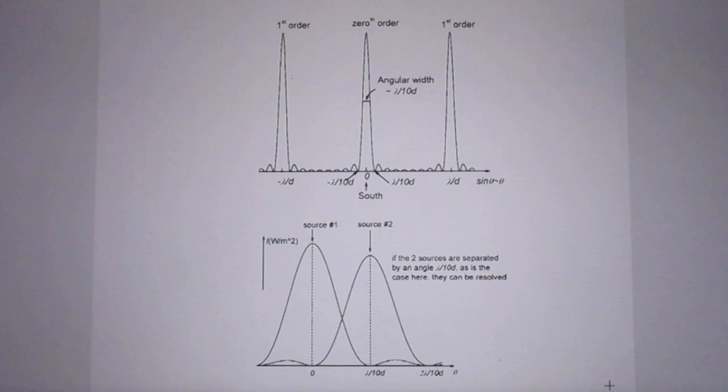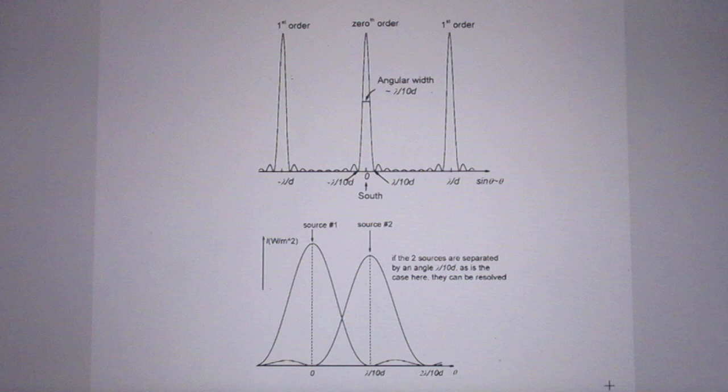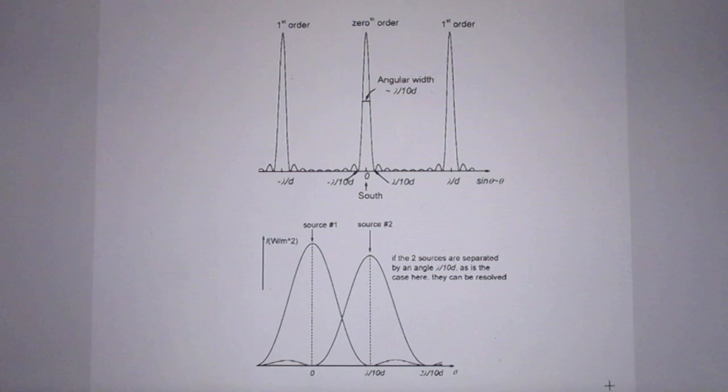If they are closer than that in angles, you cannot separate them as two separate sources. Notice that the diameter of the disks does not enter into the picture. If the diameter is huge, you get a very strong signal. If the diameter is extremely small, you would hardly see any picture because the whole system would be in the noise. So we leave that in the middle here. It doesn't depend on the diameter of the telescopes.